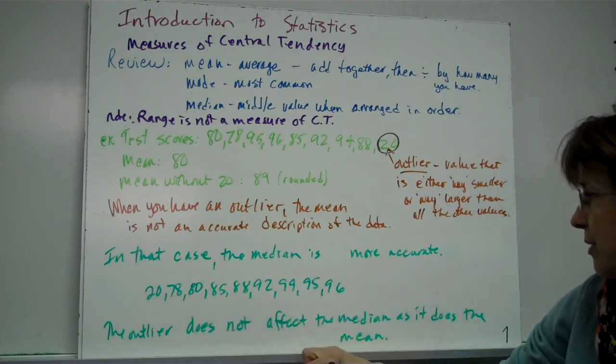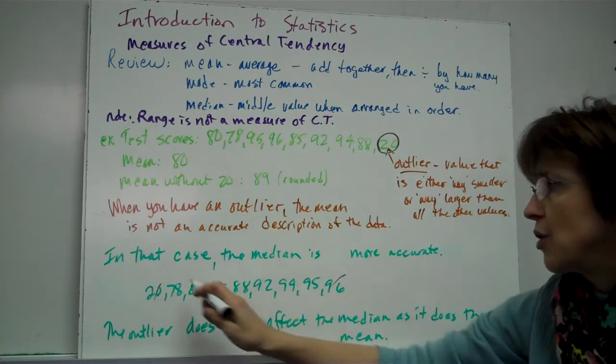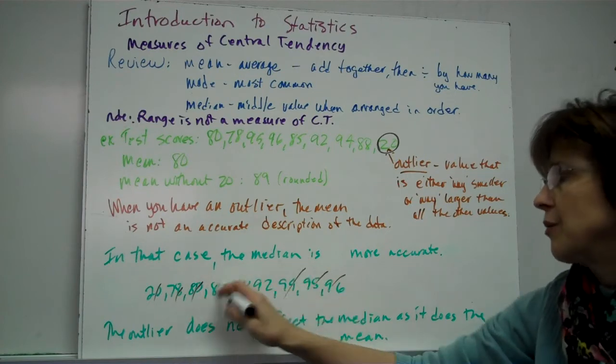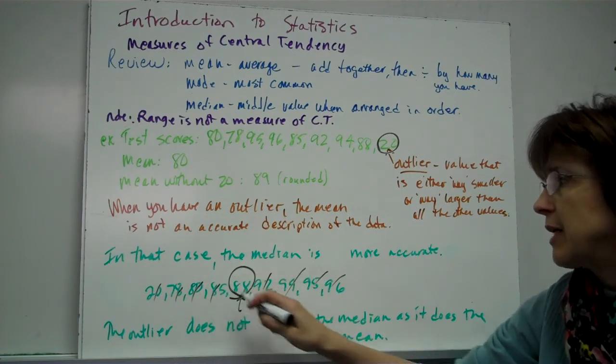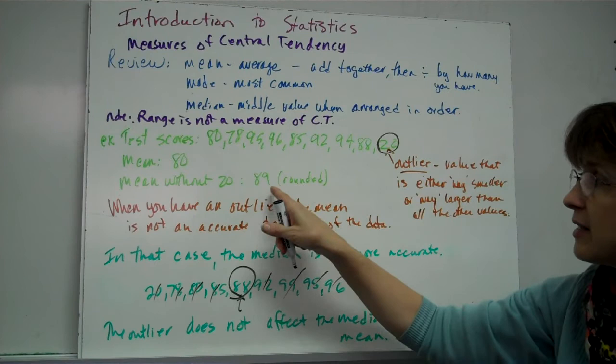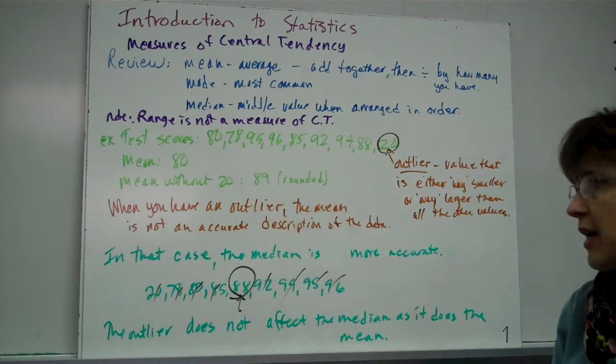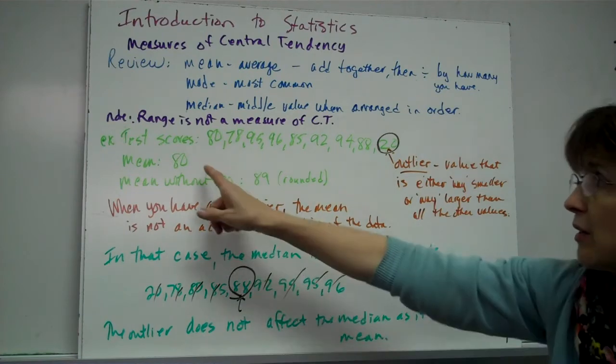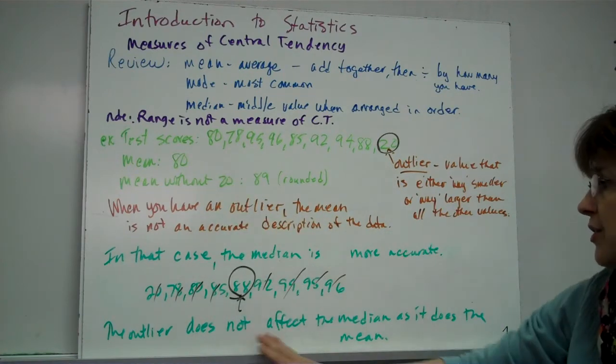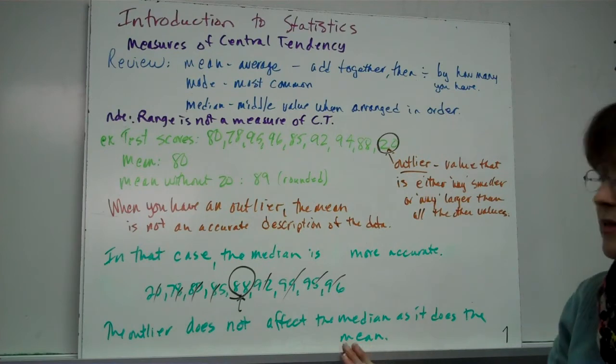If you line them in order and you get the median, if you knock it off, you know how to get the median. You go 1, 1, 1, 1, 1, 1, the middle value is the median. 88 is close to 89. This is actually round, it's 88.5. But 88 is more close to how everybody did than the mean with the outlier of 80.